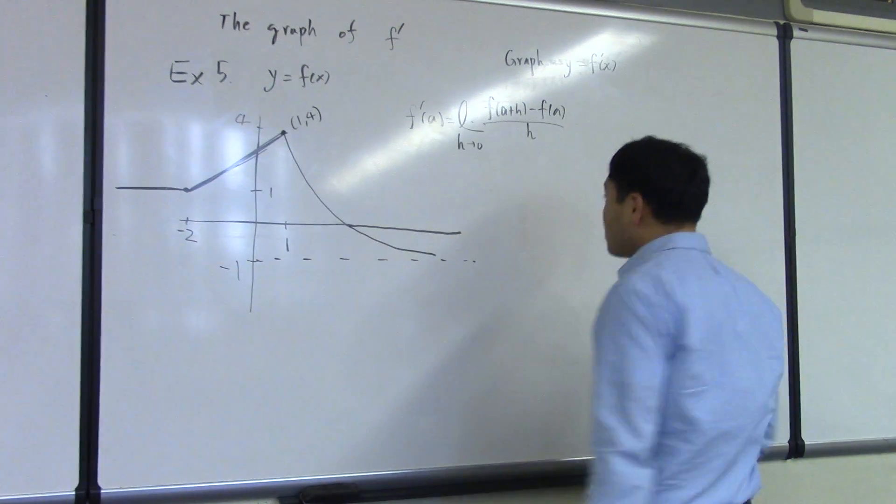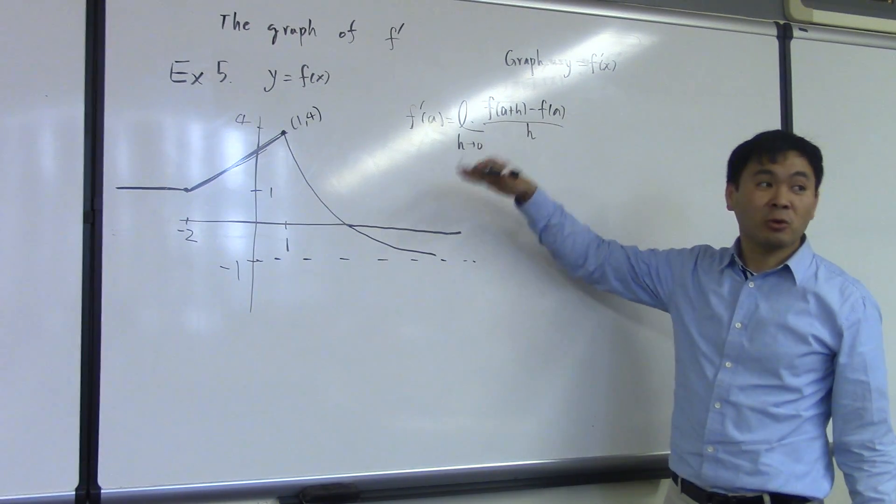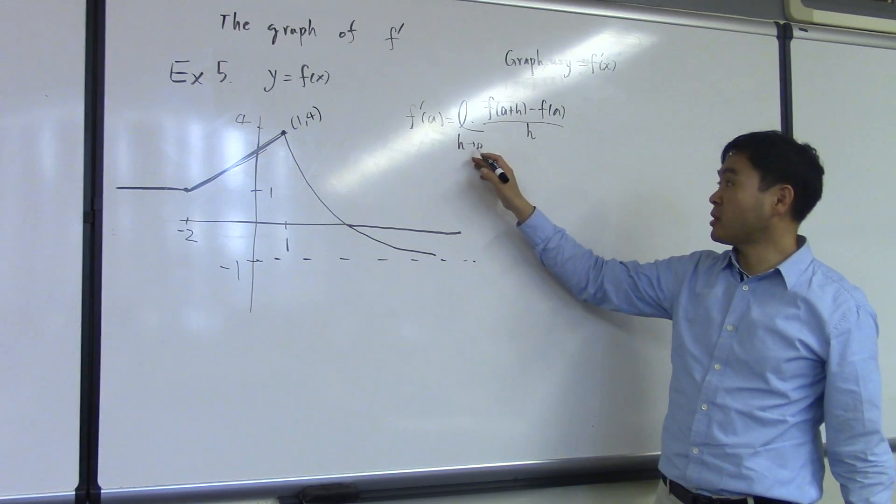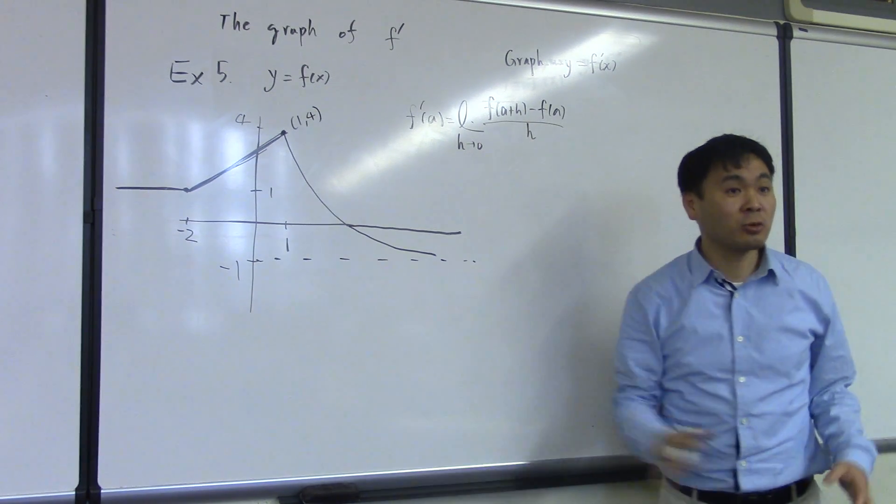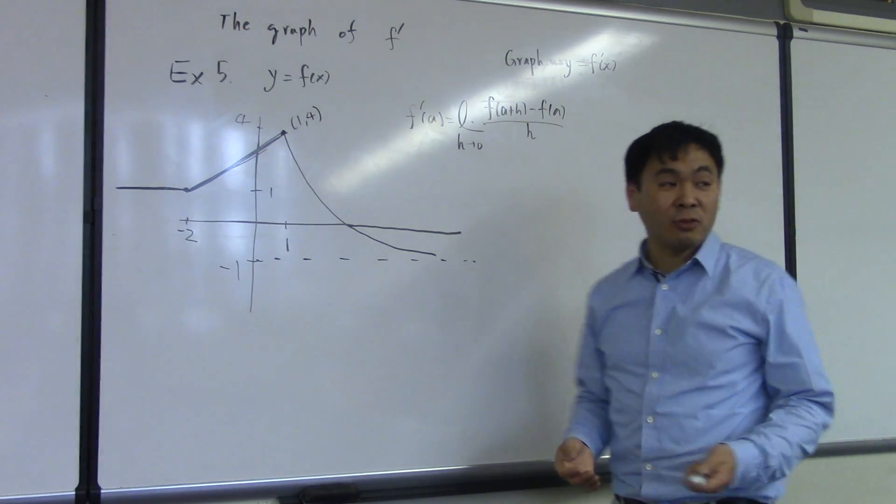So, when you replace the 0 by 0 plus, that's called the right derivative. If you replace the 0 by 0 minus, that's called the left derivative. And we can say if the left derivative and the right derivative do not match, then the derivative doesn't exist. That's the criteria for differentiability.